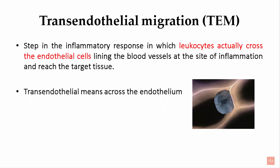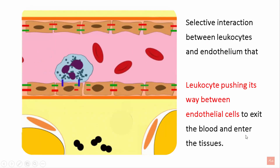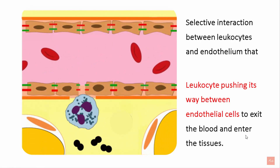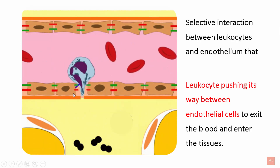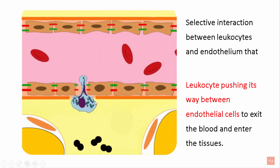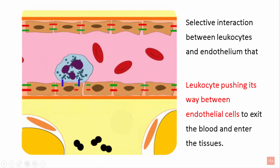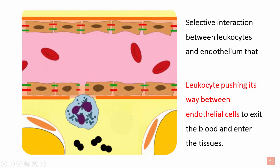Transendothelial literally means crossing the endothelium, as you can see in this image. There is a selective interaction between the leukocytes and the endothelium that causes the leukocyte to push its way between the endothelial cells, exit the blood, and enter the tissues.